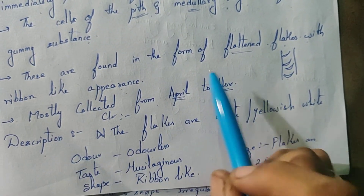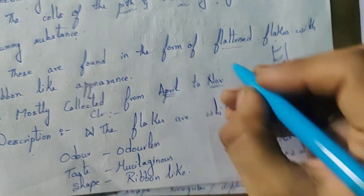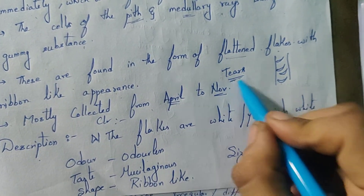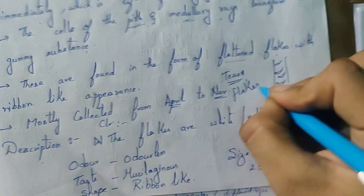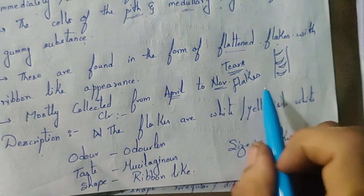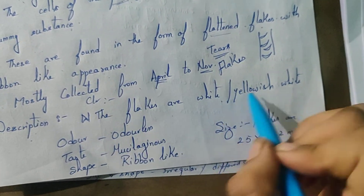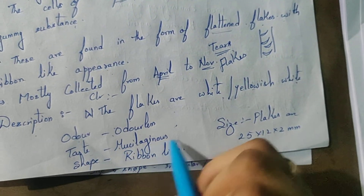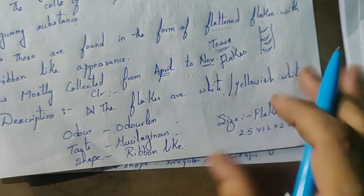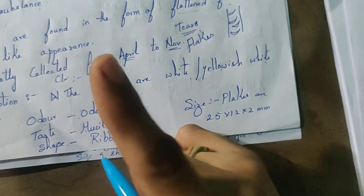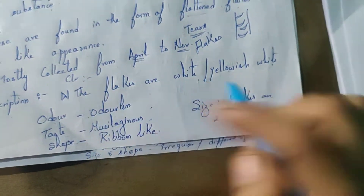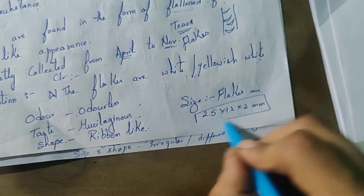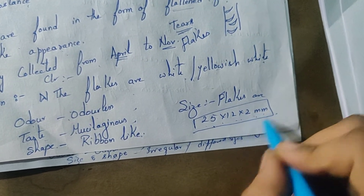Coming to description. In acacia, the gums are known as tears, whereas here the gums are known as flakes. The flakes are white or yellowish white in color. Odor is odorless. Taste is mucilaginous. Shape is ribbon-like. Size is 25 × 12 × 2 mm.